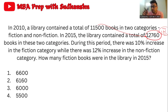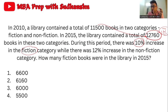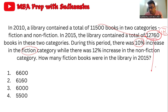Since the actual increase is slightly less than 11%, it means the fiction category is slightly more dominant. If fiction and non-fiction were in a 1:1 ratio, the overall increase would be exactly 11%. Since 10% is more dominant here, the answer is biased toward fiction. So fiction books must be more than half the total. Half of 12,760 is around 6,400. The only answer option greater than half is 6,600 — so that is the answer.